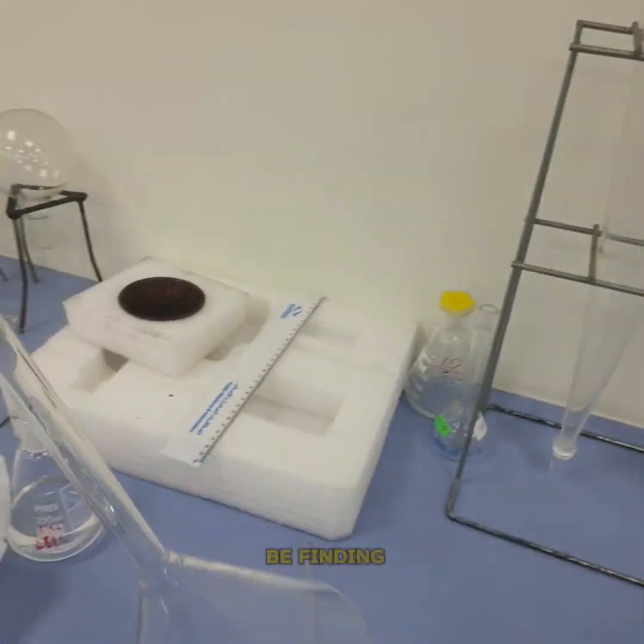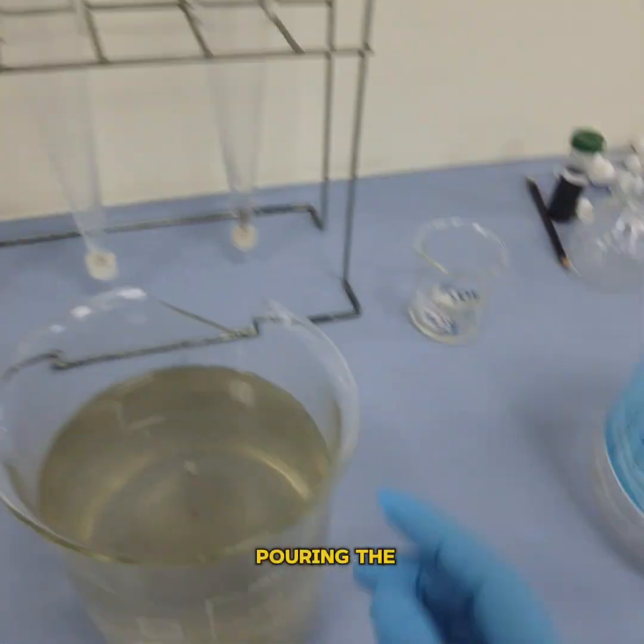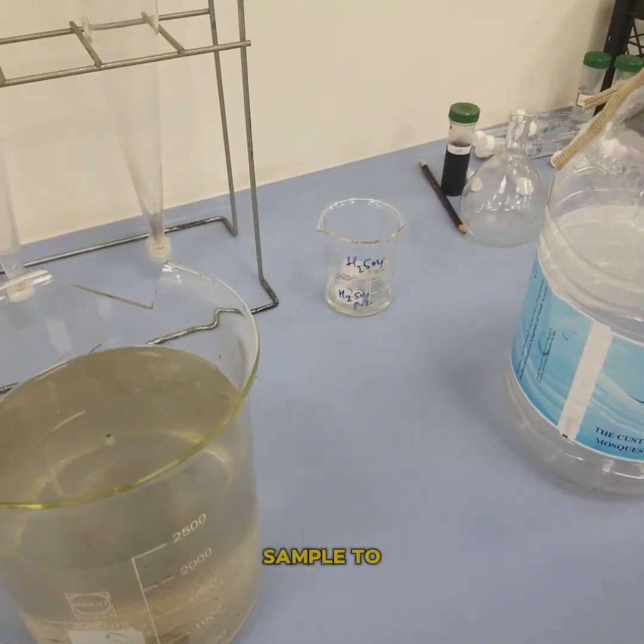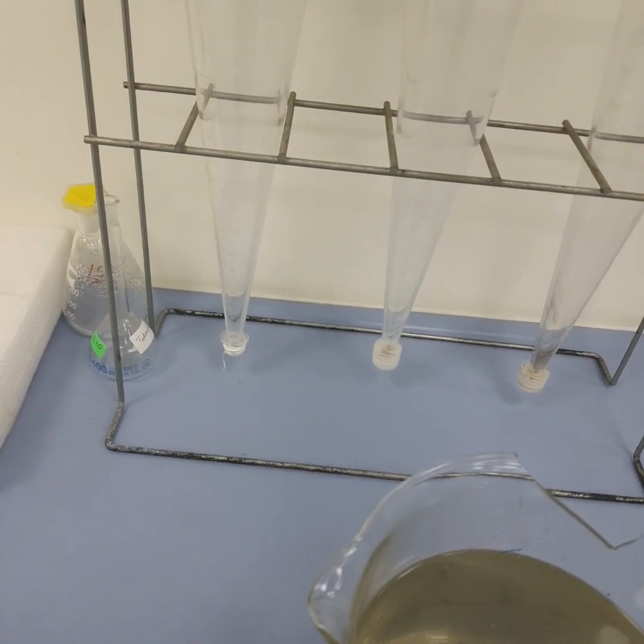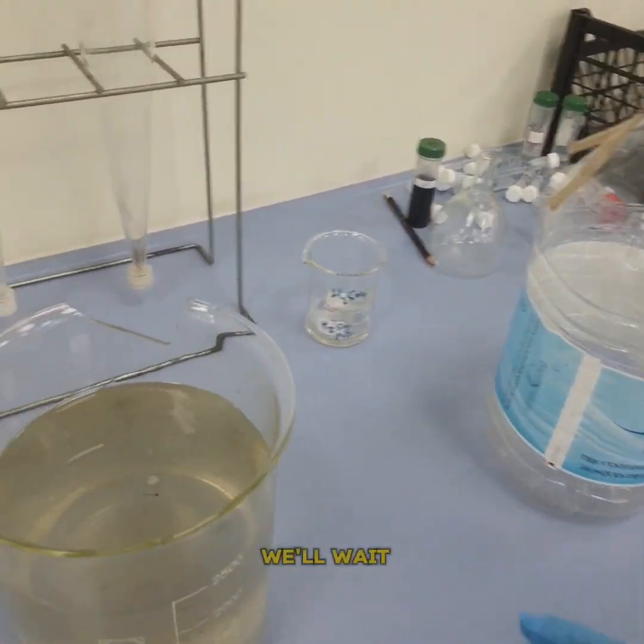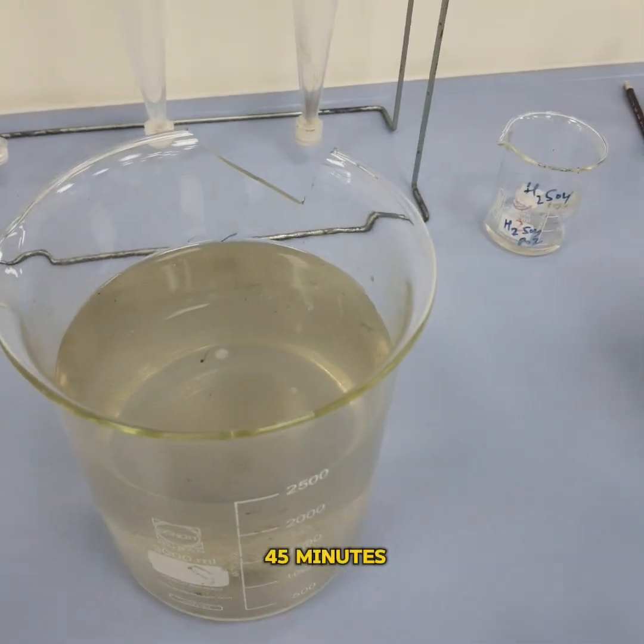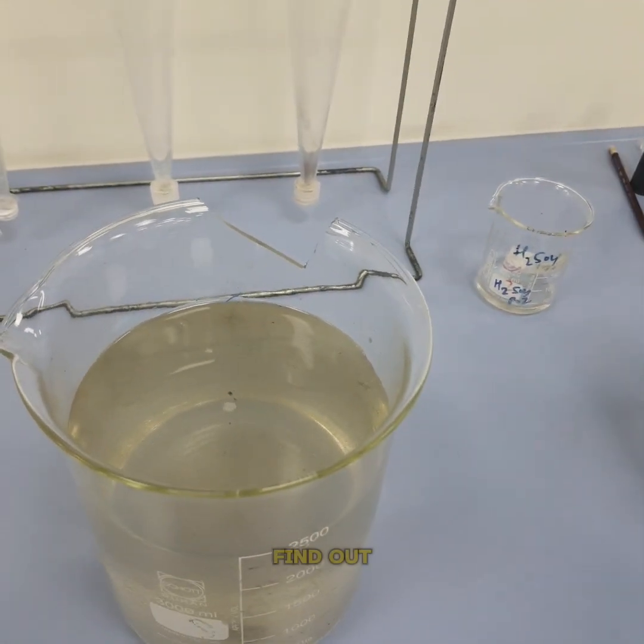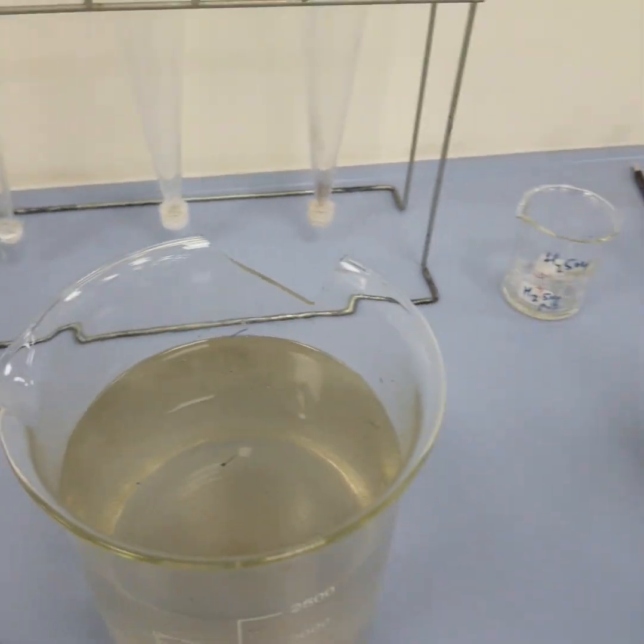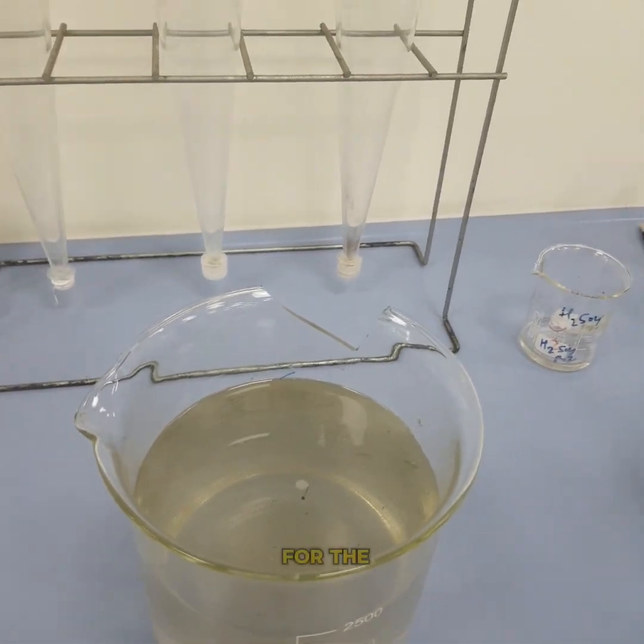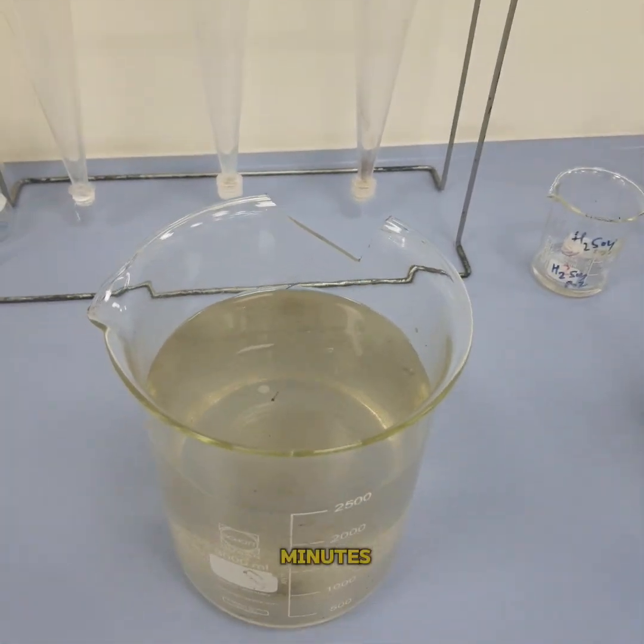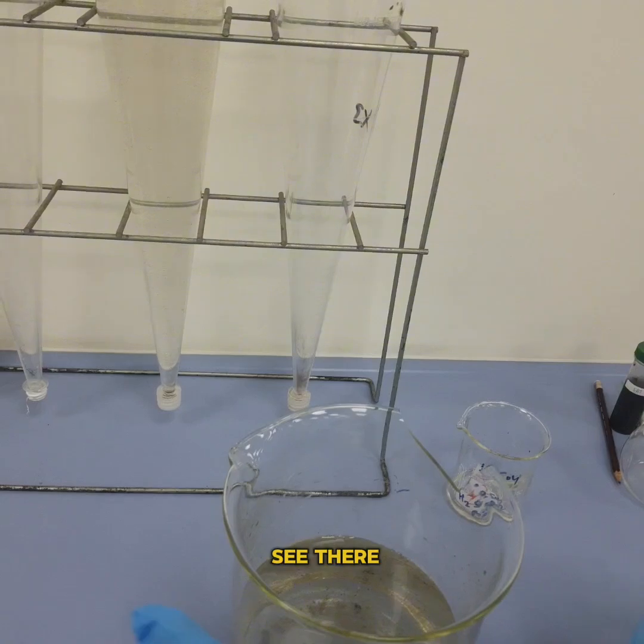Now we have an Imhoff cone which we will be finding out. We're pouring the water which is having sludge, a well-mixed sample, to the Imhoff cone. The graduation is around one liter and then we'll wait for around 30 to 45 minutes and then we will find out the settleable solids. This is very important in finding out the SVI and SDI for the sludge sample. So let's pour and wait for 30 to 45 minutes.